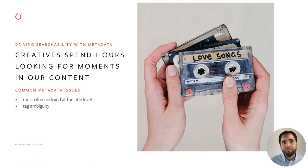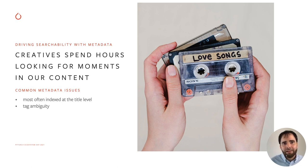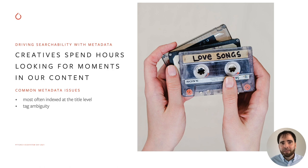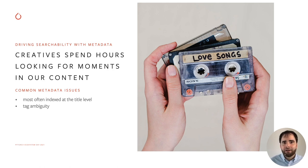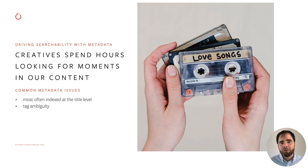The same happens in media archives. Most of the metadata is at title level, and even this title-level metadata can be ambiguous. The scope of the tag 'love songs' on the tape will need to be properly defined and agreed on to make that tag useful, especially if we want to search across millions of tapes.